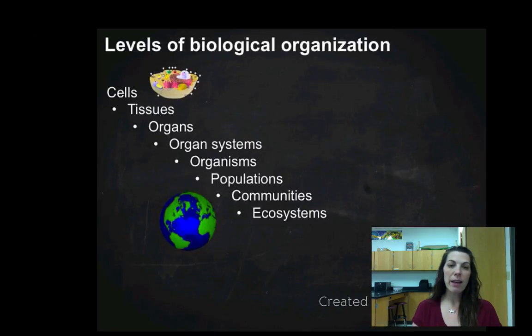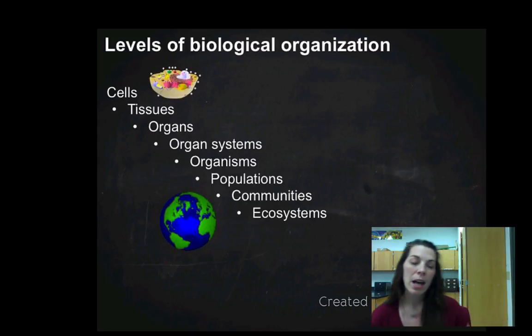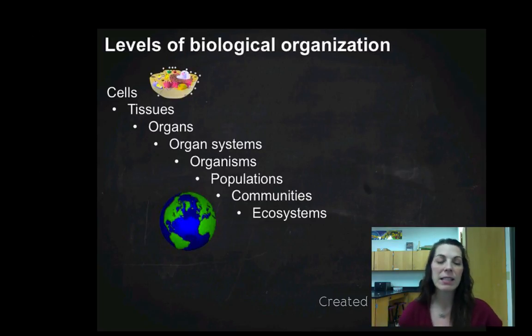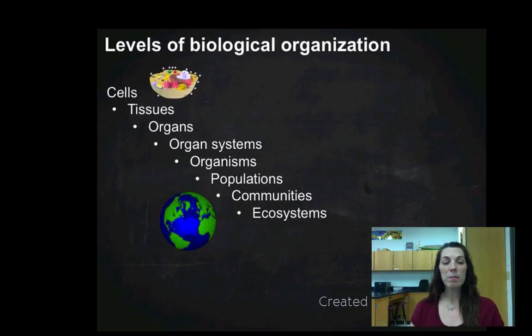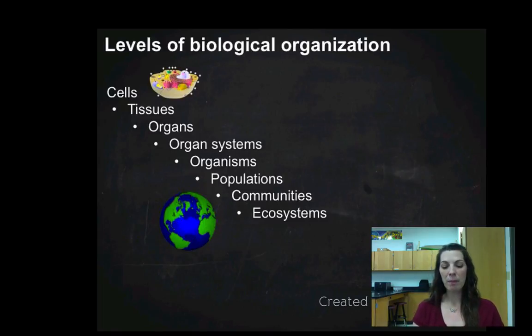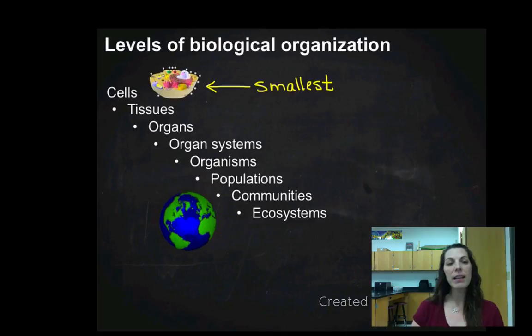The first thing we're going to talk about today is the levels of biological organization. You should be familiar with these levels. Basically, cells are the most basic level of biological organization. When you have cells that combine together, they form tissues. We're going to go from smallest to largest. Cells of the same type group together to form tissues.